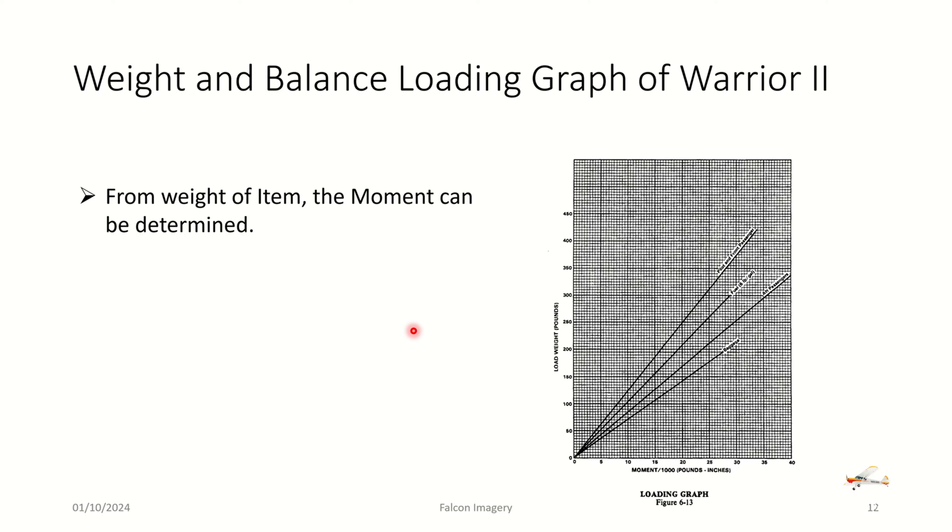This is an example of a loading graph in the Piper Warrior so that we don't have to necessarily do all the multiplication. If we know, for example, the front pilot and the passenger weigh 400 pounds, we can just come down here and we can get the moment. Notice it's divided by 1,000 by just picking it off the chart. So it makes filling up that previous table easier. And again, we need the loading lines for the pilot and the passengers, the aft passengers, the fuel on board, and the baggage. All four of those are listed here.